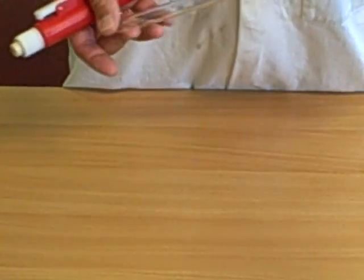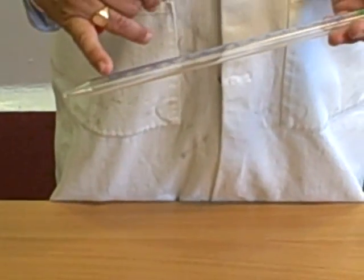A pipette is another accurate way of measuring liquids. This is a 25 mil pipette. It goes from 0 to 25.